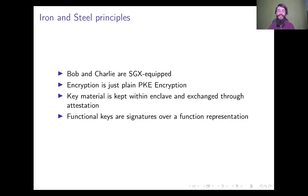Let's examine the Iron and Steel protocols. The two protocols are very similar, although they compute different kinds of functionality. In both, we have Bob and Charlie as machines equipped with SGX, or a trusted execution environment. The encryption phase simply corresponds to public key encryption, for which the key material is kept securely within different enclaves, and only exchanged after the enclaves have attested to each other that they're valid. Functional keys correspond to signatures over some kind of function representation, for which the enclaves check whether they're valid.